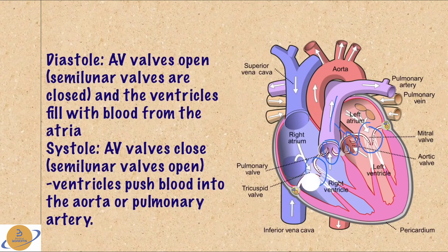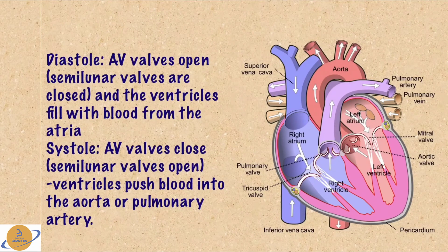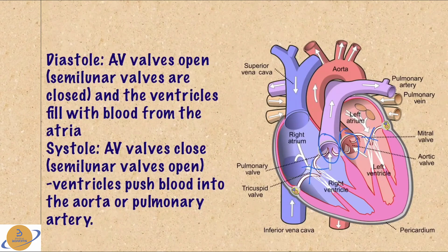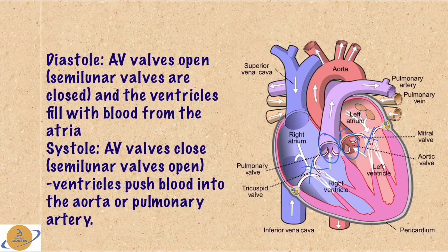In systole, the opposite is true. The semilunar valves are open — your pulmonic and aortic — and then your AV valves are closed. The ventricles contract and push the blood into your pulmonary artery and into the aorta, to the body.